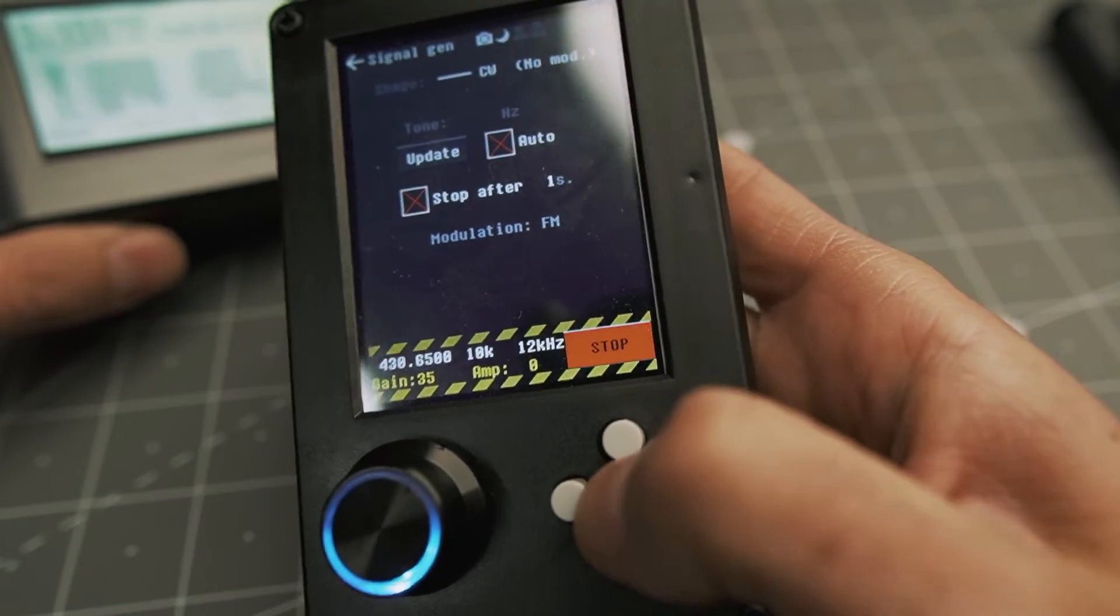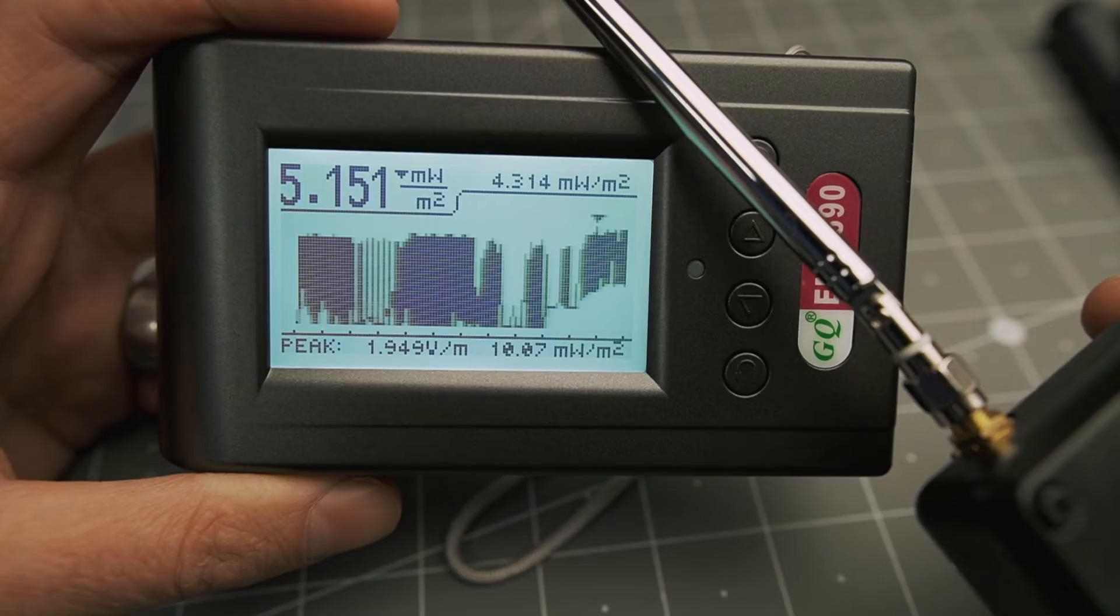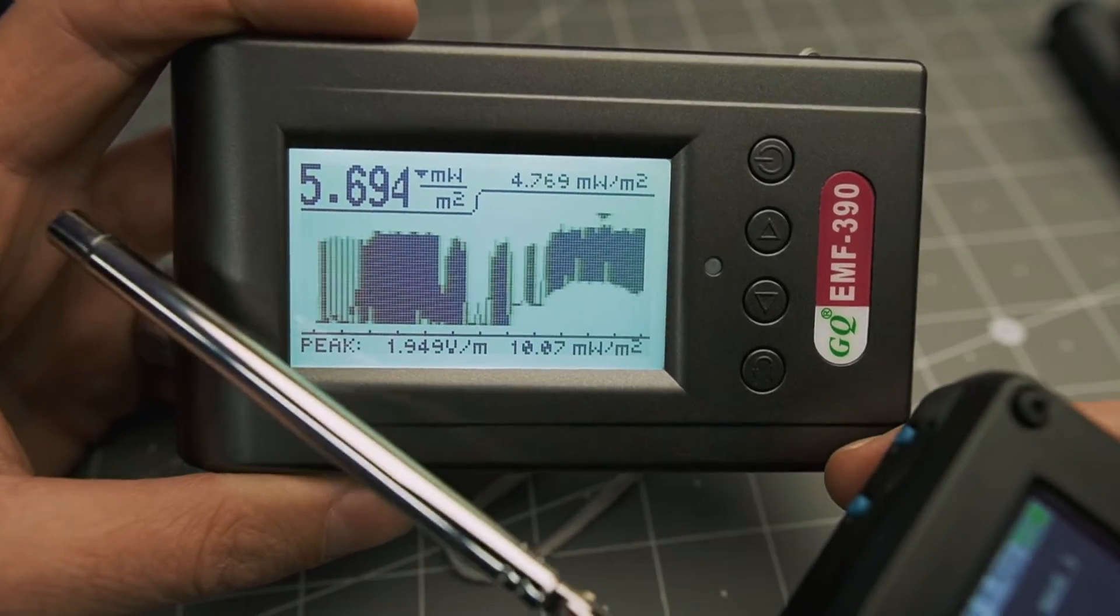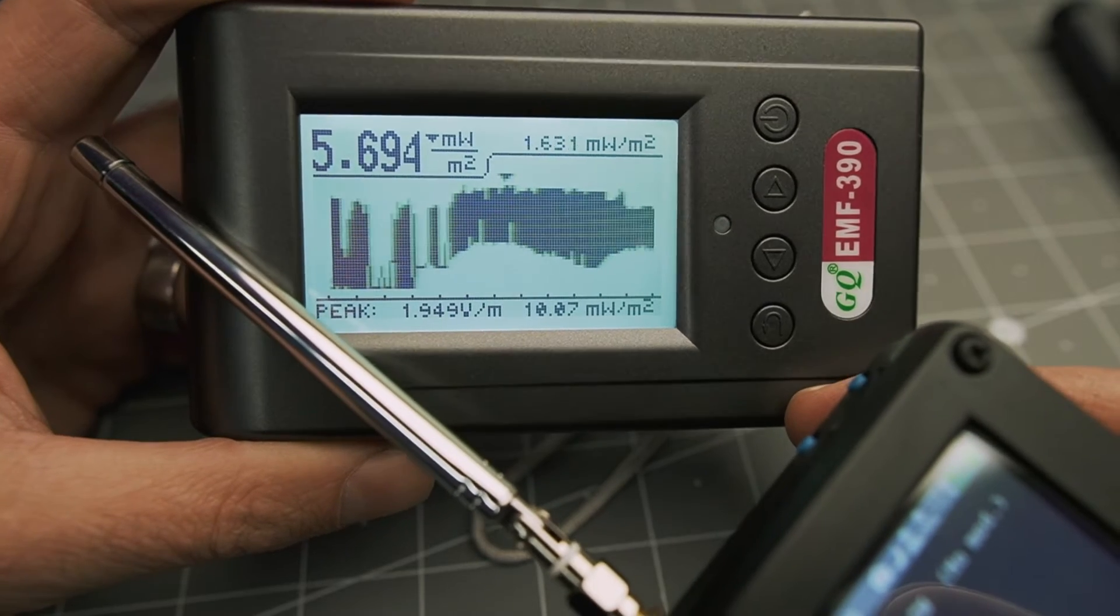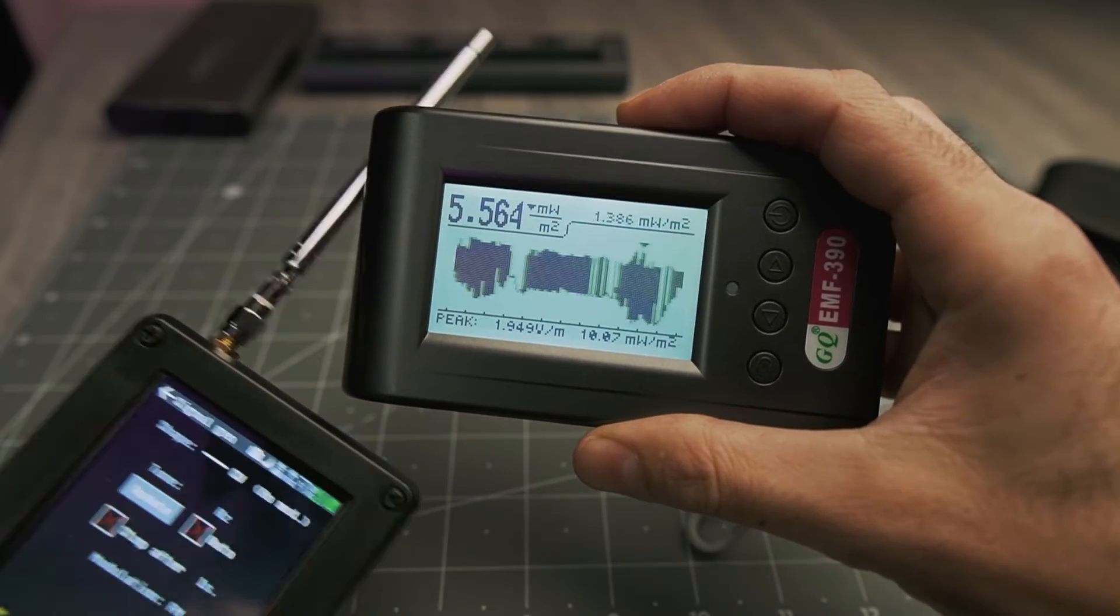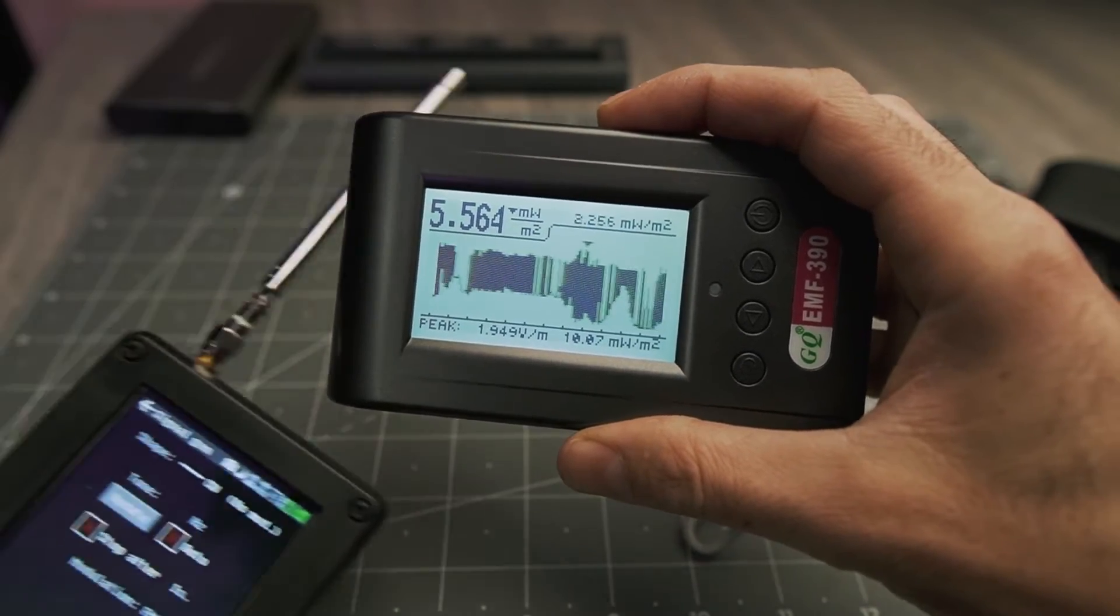Now, if I introduce a signal generator here, we'll see the floor start to rise on the graph. So if I pull this away, it drops down. If I bring it back in, it goes up. So you can see how it reacts in real time to a signal.